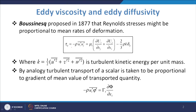The mean Reynolds stress τ_ij = −ρ u_i′u_j′ (averaged) is written as: μ_t (∂u_i/∂x_j + ∂u_j/∂x_i) − (2/3)ρk δ_ij, where δ_ij is the Kronecker delta, which vanishes when i ≠ j.